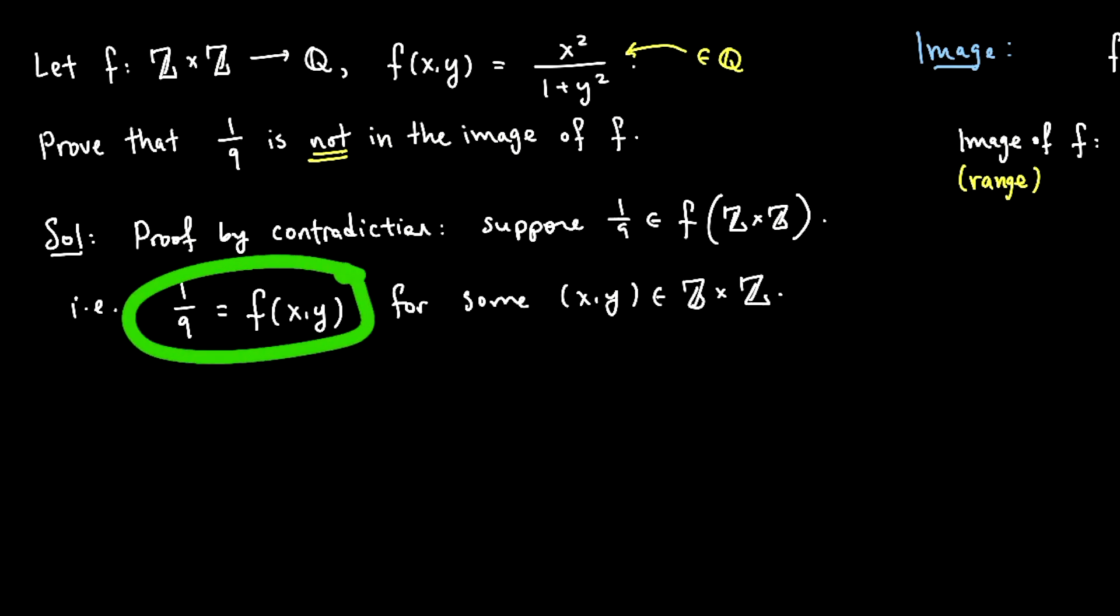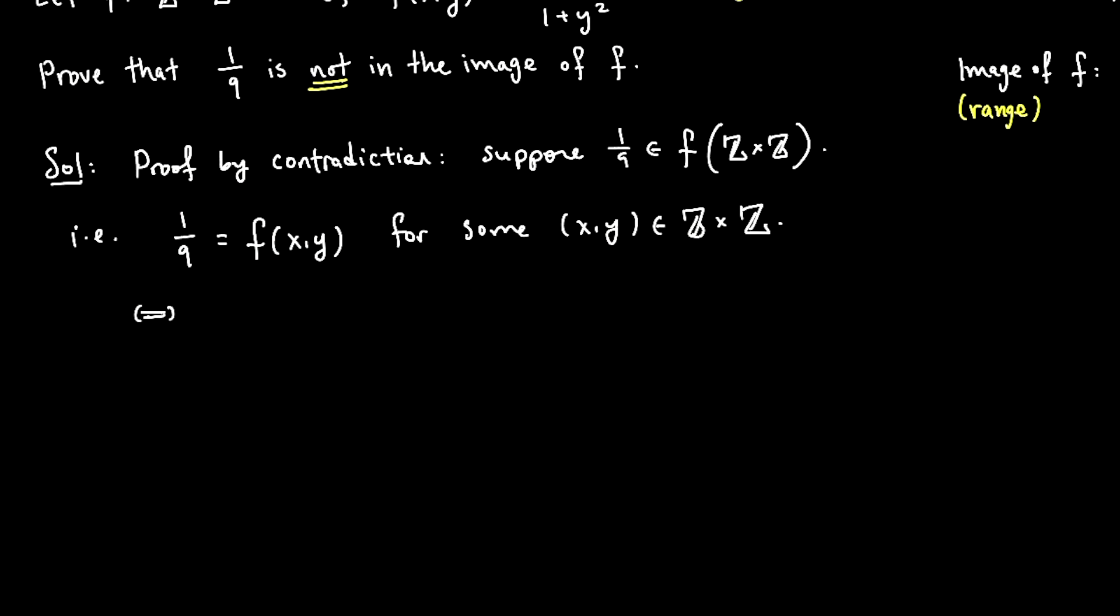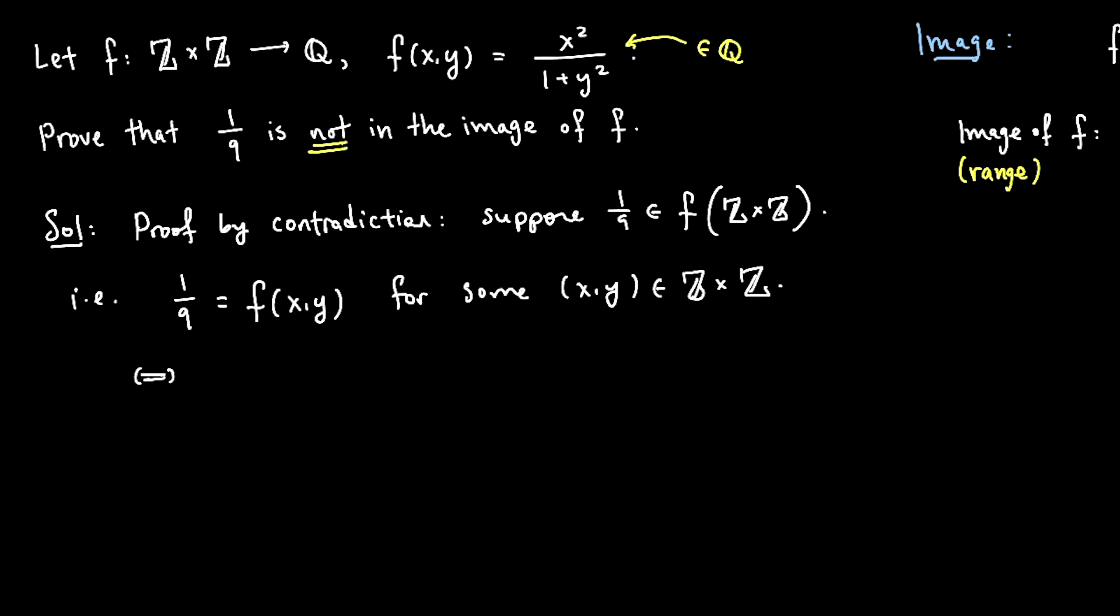And I have to use this assumption to derive a contradiction. Well, I know the definition of f, it's x squared over 1 plus y squared. So I know 1 over 9 would equal x squared over 1 plus y squared.